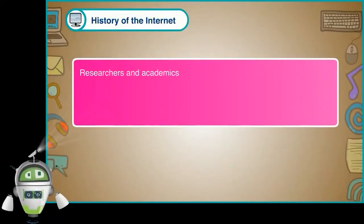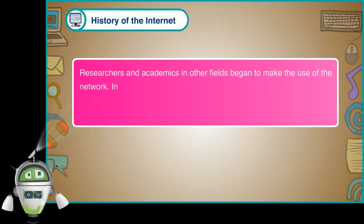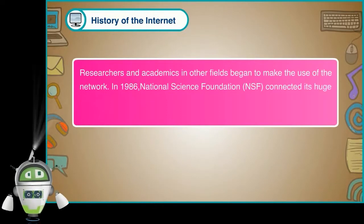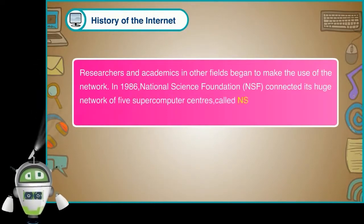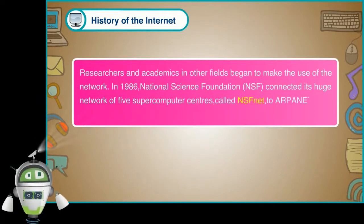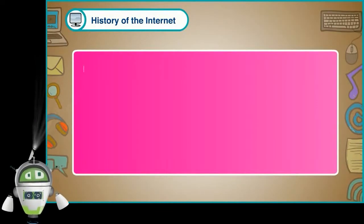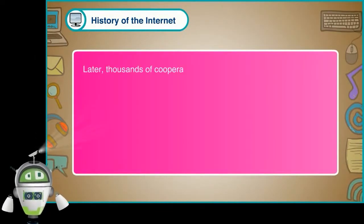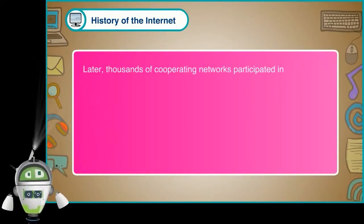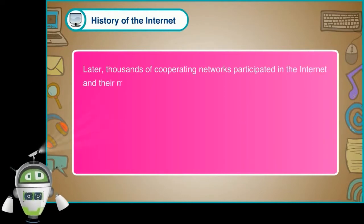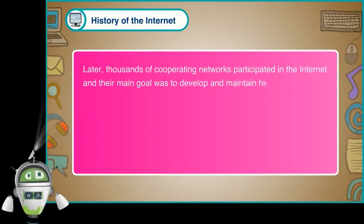Researchers and academics in other fields began to make use of the network. In 1986, the National Science Foundation (NSF) connected its huge network of five supercomputer centers, called NSFNET, to ARPANET. This configuration of complex networks became the internet. Later, thousands of cooperating networks participated in the internet, and their main goal was to develop and maintain a high-speed network for research and education.